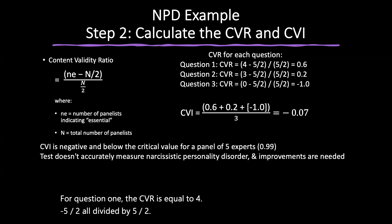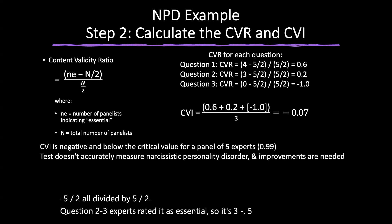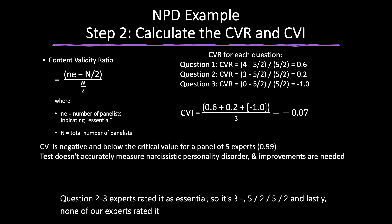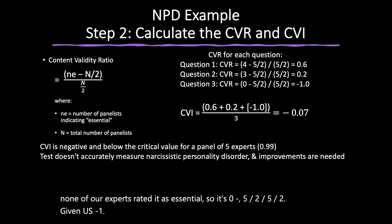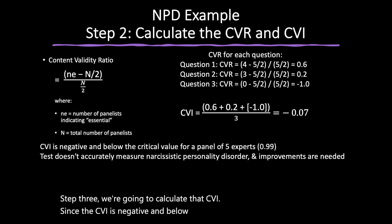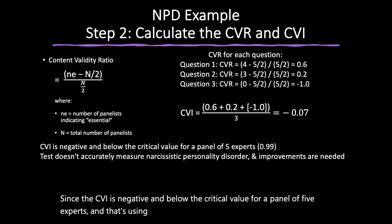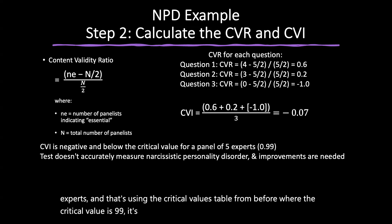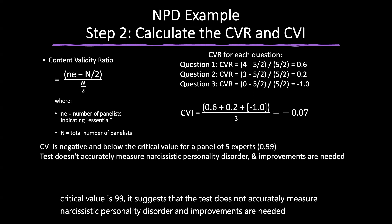This example demonstrates that by ensuring expert agreement on the essential nature of each question, it is possible to achieve high content validity for a psychological construct. It's an essential step in developing reliable and effective diagnostic research tools. Let's shift gears to criterion validity, also known as criterion-related validity — essential in evaluating the effectiveness of diagnostic tools and assessments within clinical psychology because it assesses how accurately a test measures the outcome it's designed to. There are two main types: concurrent validity, which compares the new measure with a validated criterion at the same time, and predictive validity, which uses the new measure to predict future outcomes.